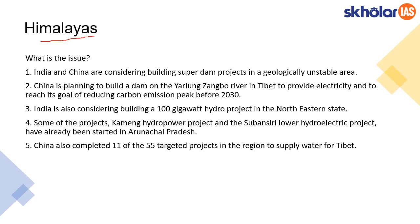India and China are both considering building dams across the Himalayan region. China is planning to build a dam across the Yarlung Zangbo river, which is the upstream of the Brahmaputra river, located in Tibet. Students, remember this — it can be asked in prelims. The purpose of building this dam is to provide electricity and to achieve China's target of reducing carbon emission peak by 2030.